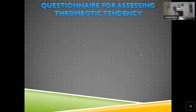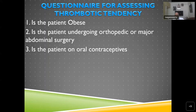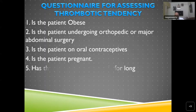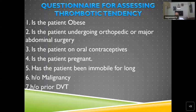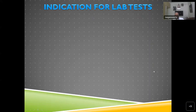For thrombotic tendency, ask: Is the patient obese — obese patients have a tendency for venous thromboembolism? Is the patient undergoing orthopedic or major abdominal surgery with prolonged recumbency? Is the patient on oral contraceptives? Is the patient pregnant — pregnancy is a pro-coagulant, thrombotic state? History of malignancy or chemotherapy, history of DVT, angina, or previous stroke all indicate thrombotic tendency.